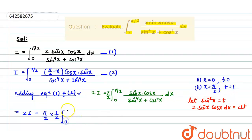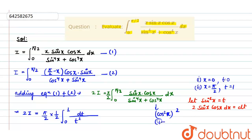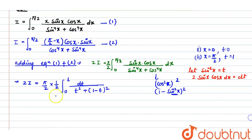With the new limits 0 to 1, dt remains in the numerator. In the denominator, sin⁴(x) = (sin²x)² = t². For cos⁴(x), since cos²(x) = 1 − sin²(x) = 1 − t, we get cos⁴(x) = (1 − t)². So 2I equals π/2 times 1/2 times the integral from 0 to 1 of dt over t² + (1−t)².